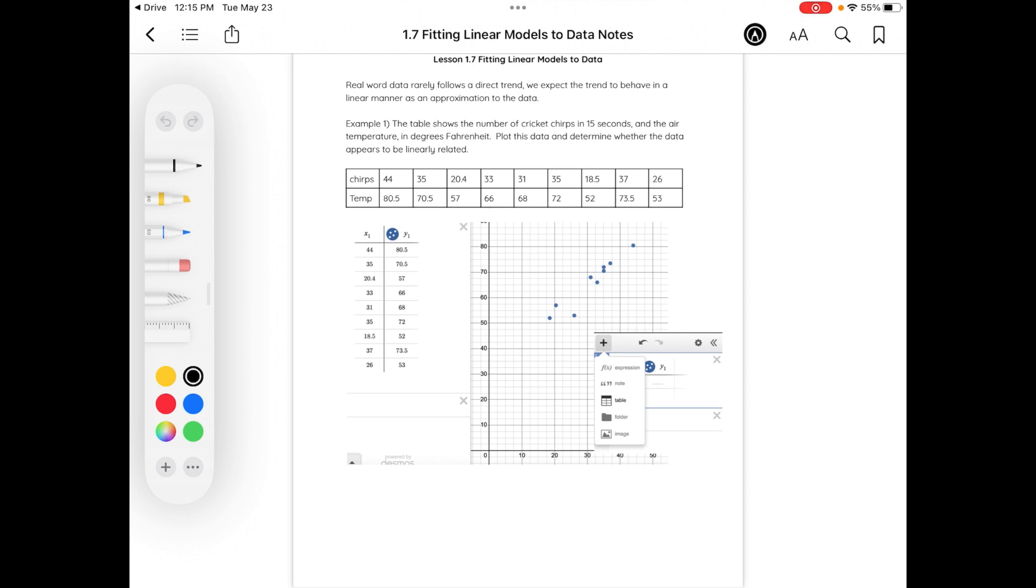It is rare for real-world data to actually follow a very specific trend or behave in an exact linear manner. We need to utilize some graphing technology to help us determine if there is a trend to help us predict future behavior or behavior within our data collection. The table shows the number of cricket chirps in 15 seconds and the air temperature in degrees Fahrenheit.